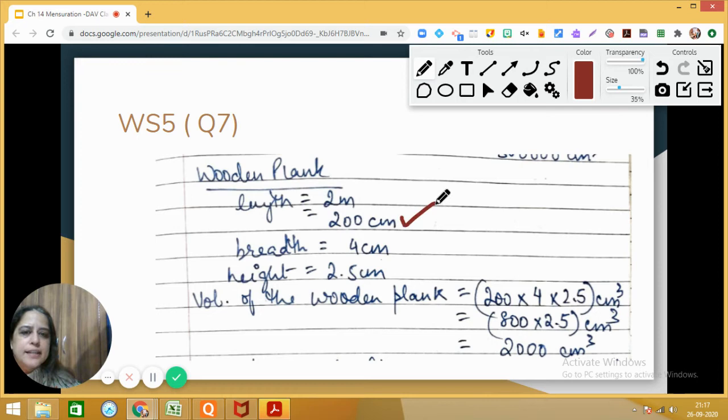So this will be 200 centimeters, perfectly fine. What is the breadth which is given? 4 centimeters. And height is 2.5 centimeters. So can you calculate now the volume of the wooden plank? Yes, you are going to find the product: 200 × 4 × 2.5. Yes, quickly do this. So this is 800 × 2.5.